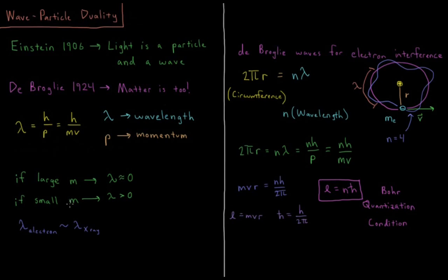But as you get to smaller and smaller mass, smaller and smaller objects, lighter and lighter, the wavelength starts to be greater than zero. The wavelength starts to be finite and measurable.